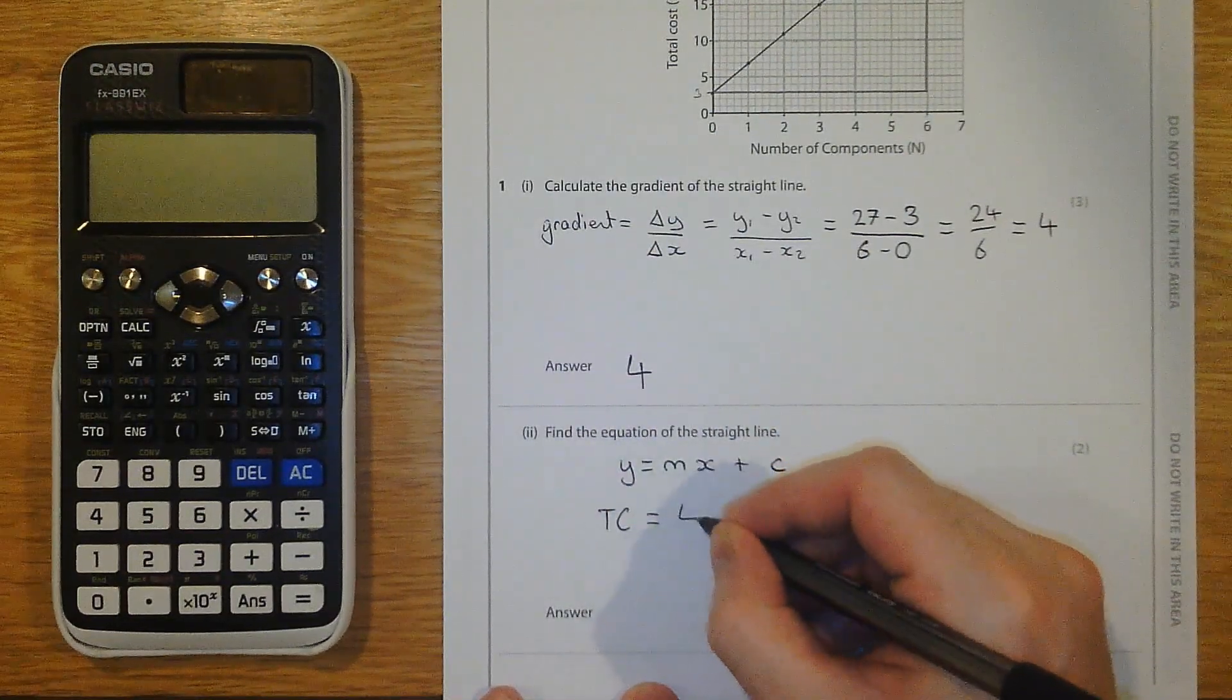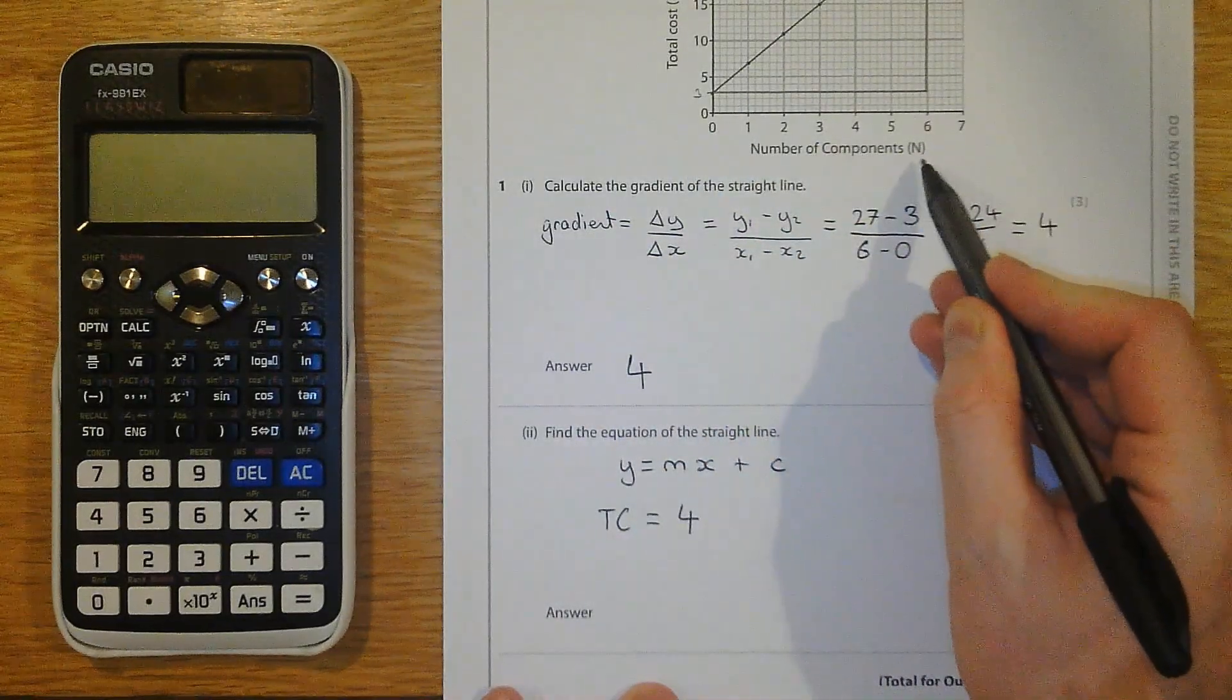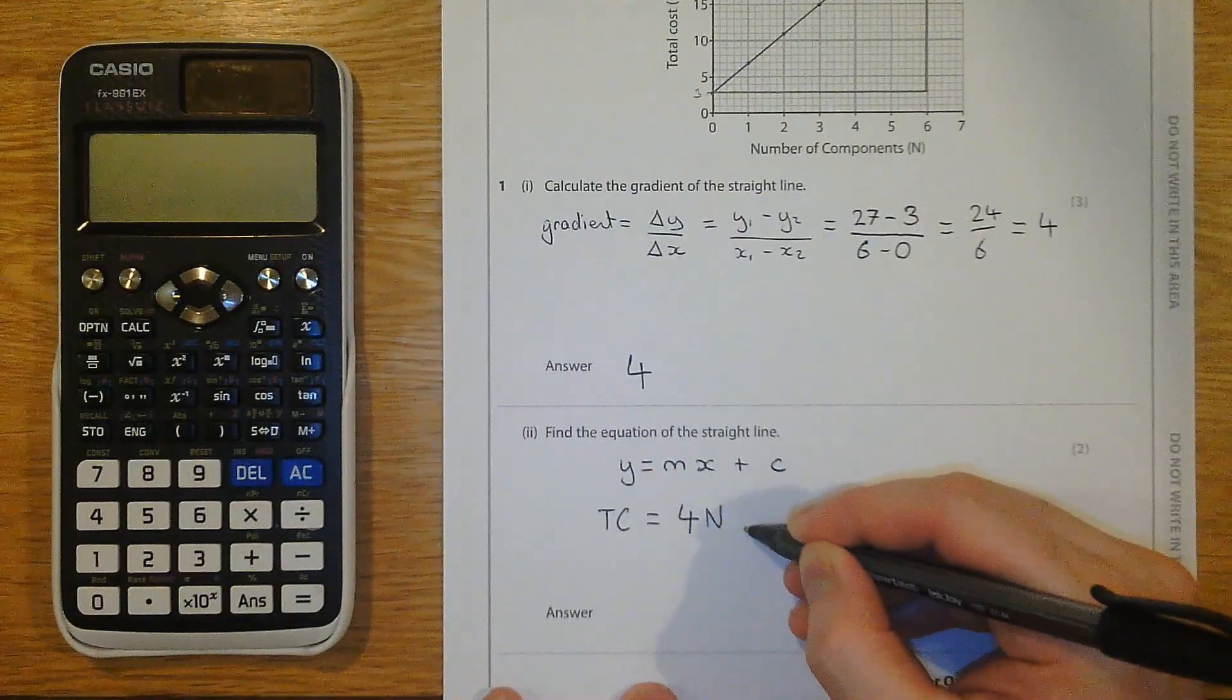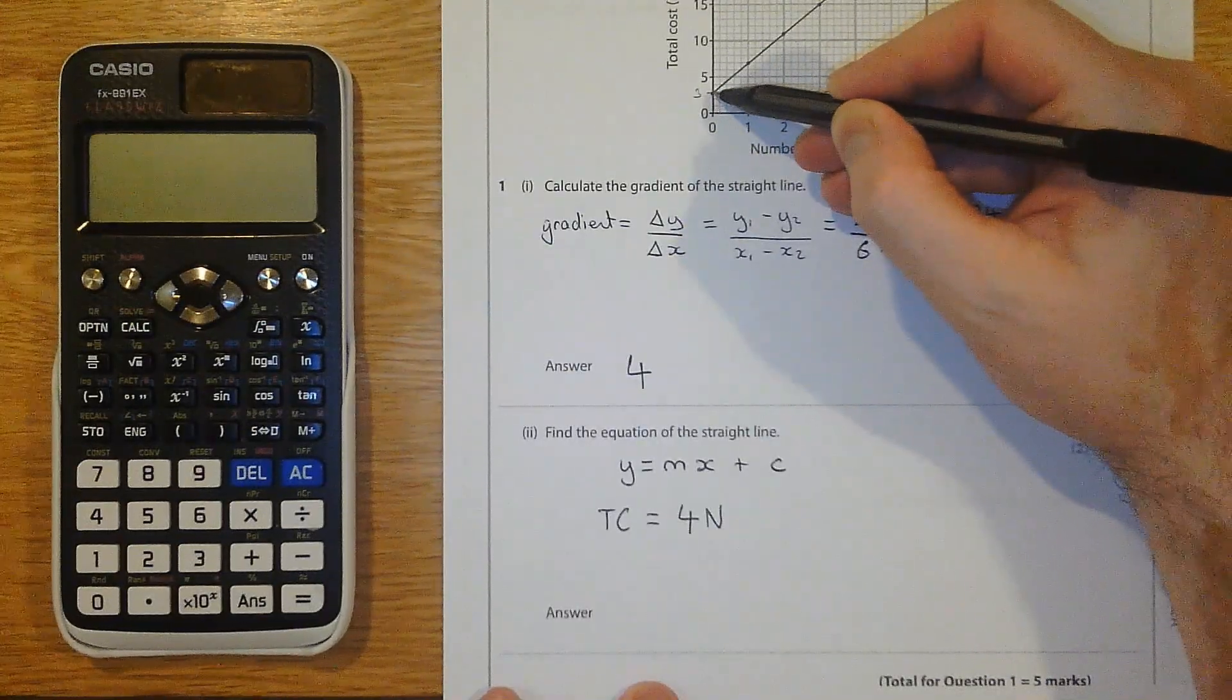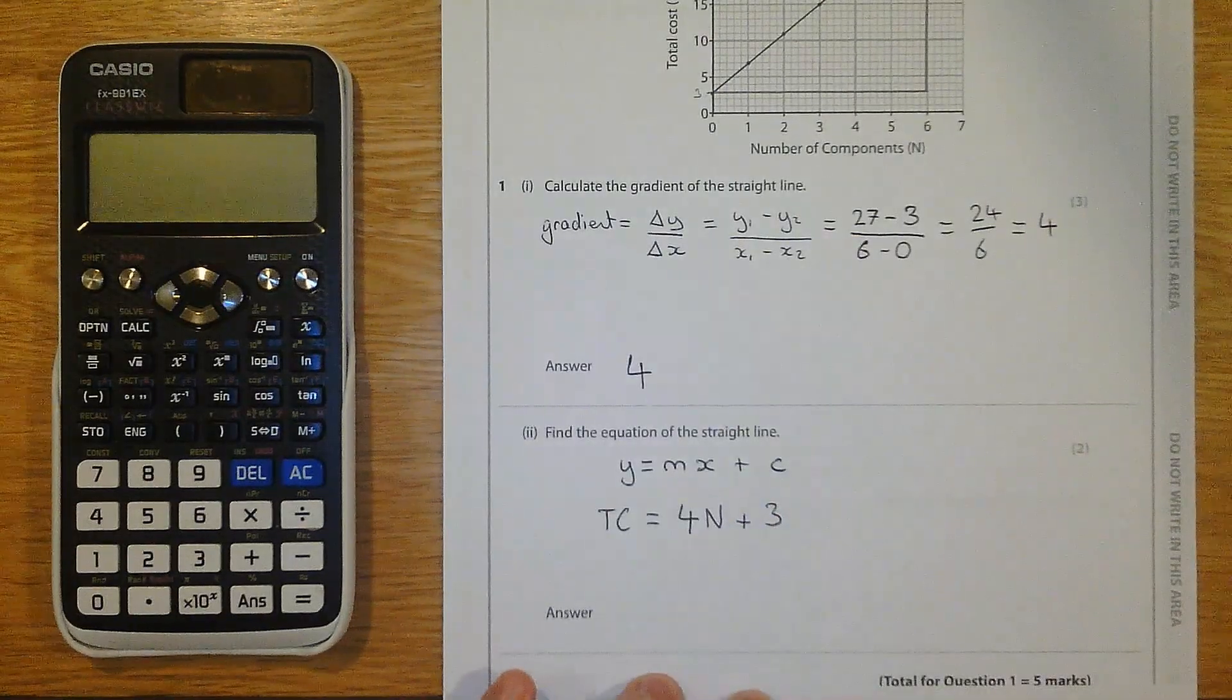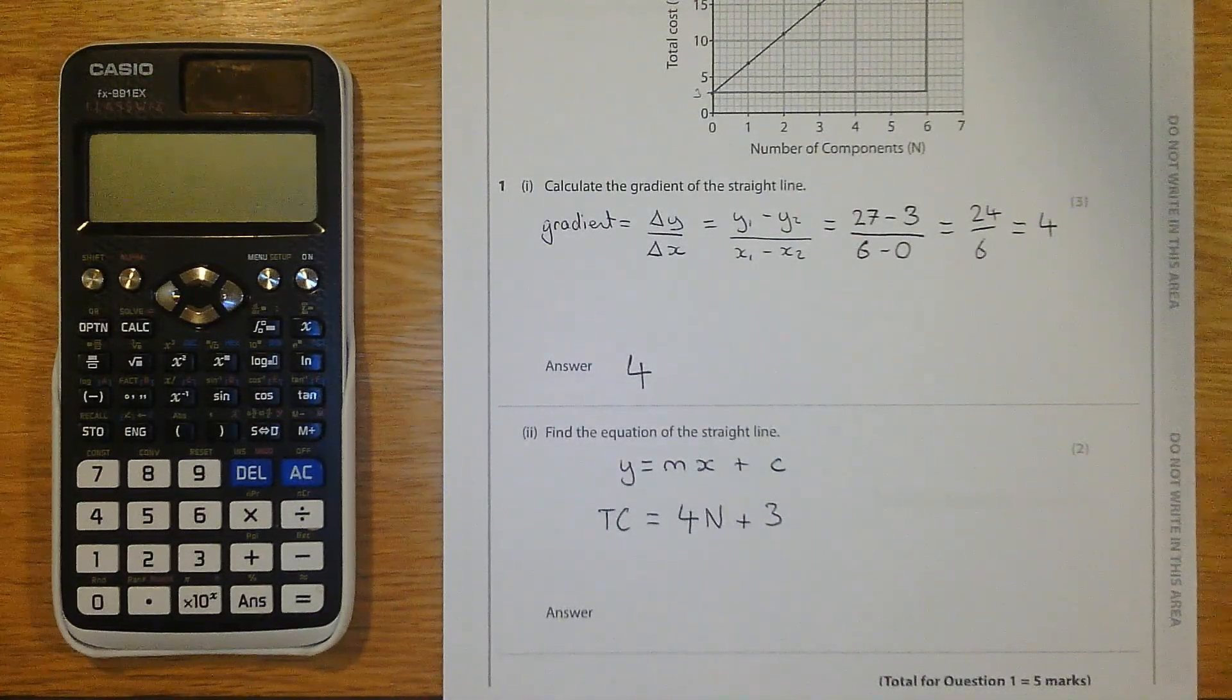And x is whatever's on the horizontal axis, which the symbol is n. c, I was about to put the plus in, but it might be negative, so I'll wait. It isn't though, is it? The line hits the y-axis at 3. So positive 3, so I can put the plus in after all. TC equals 4N plus 3.